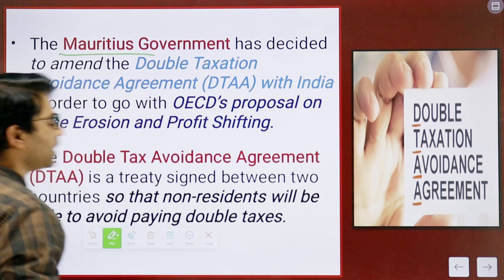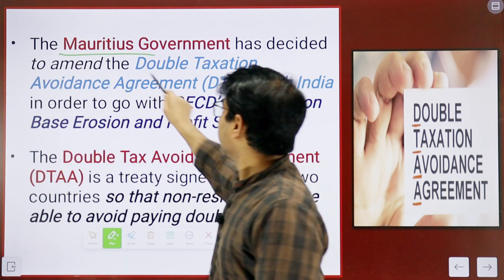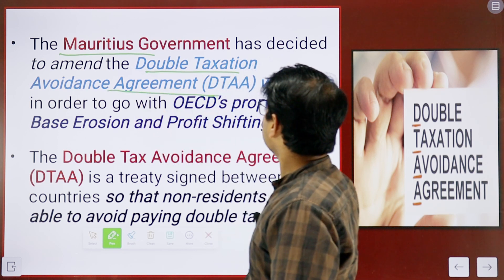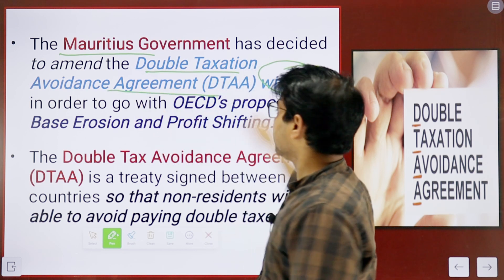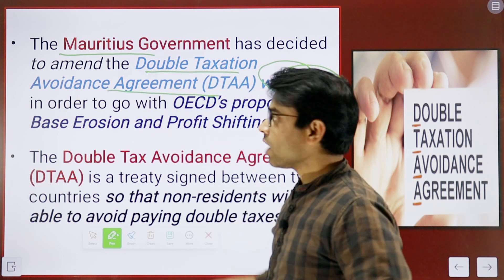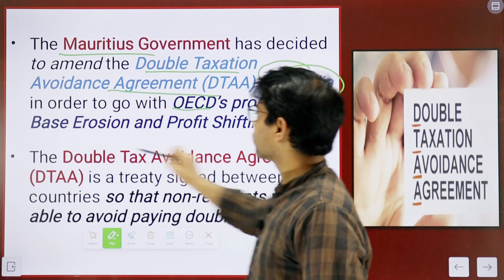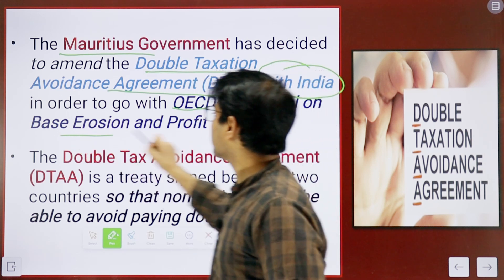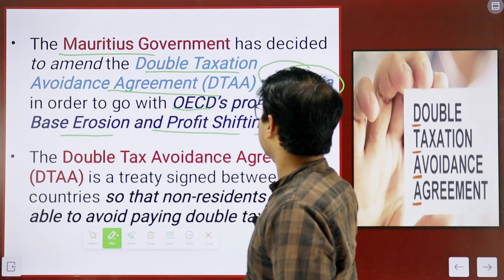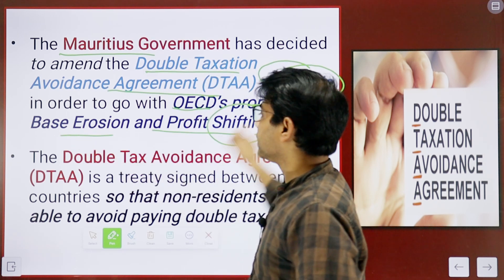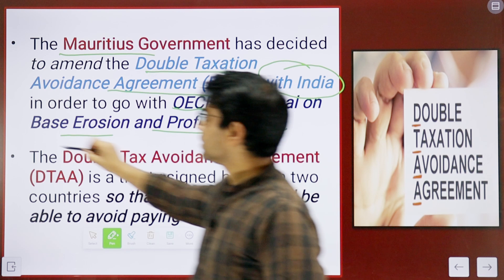In this context, Mauritius's government has decided to amend the Double Taxation Avoidance Agreement it has signed with India. Now it wants to align with the OECD framework known as Base Erosion and Profit Shifting, or BEPS.